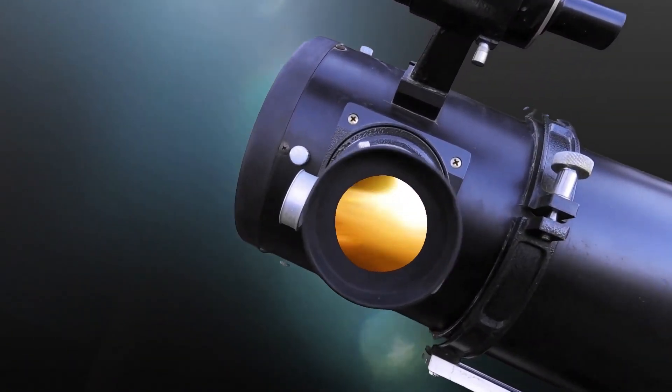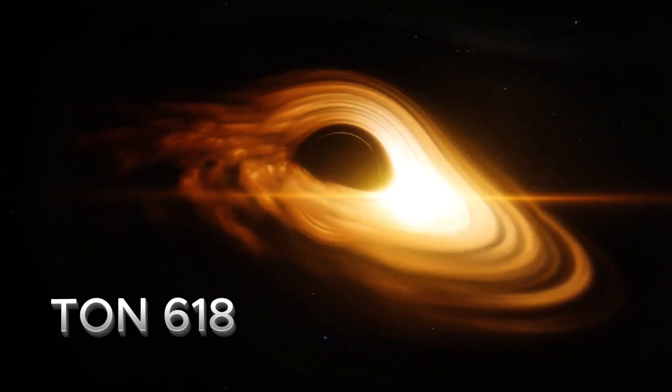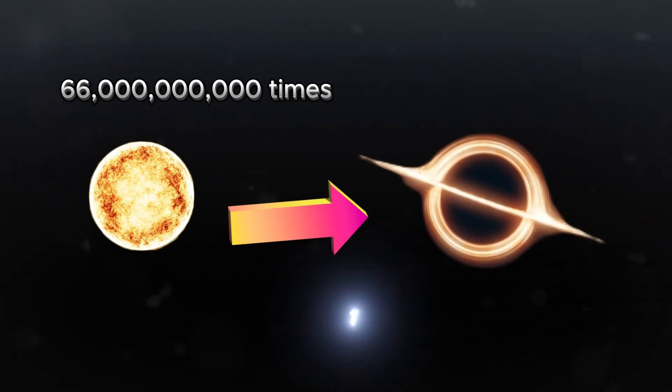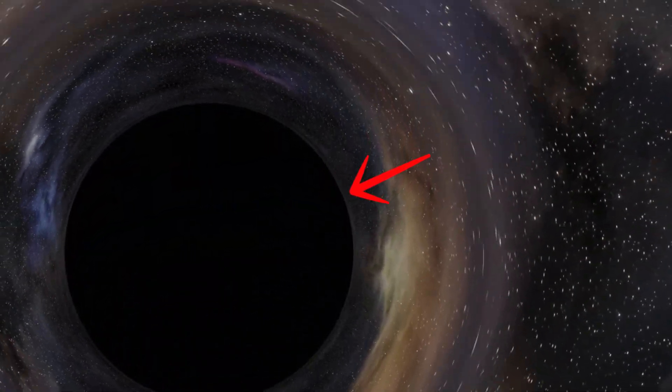But the largest black holes are supermassive. The biggest one found so far is called Ton 618. It's over 66 billion times the mass of the sun. Its event horizon would be about 195 billion kilometers across.